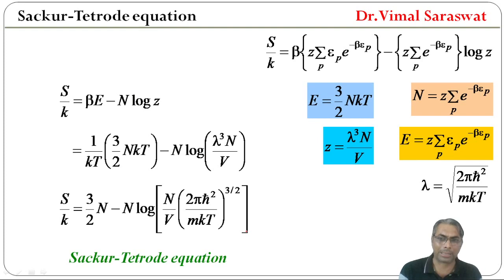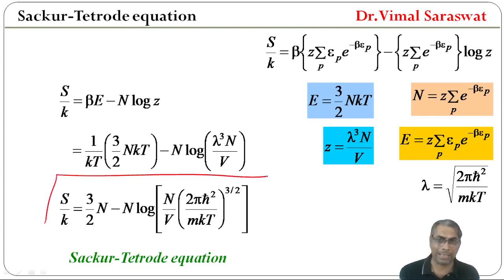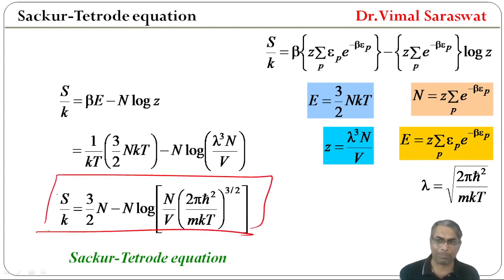This result is known as the Sackur-Tetrode equation: S/k = (3/2)N − N·log[(N/V) · (2πħ²/mkT)^(3/2)].